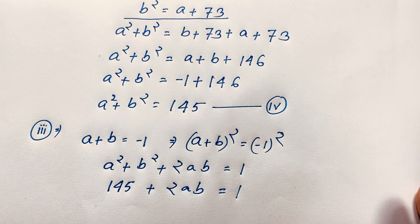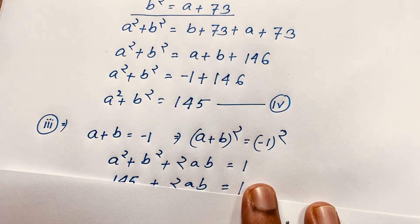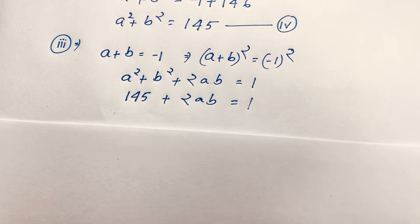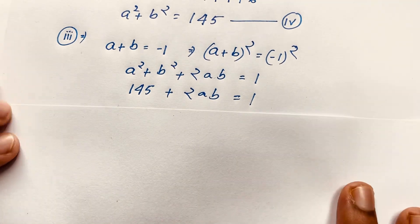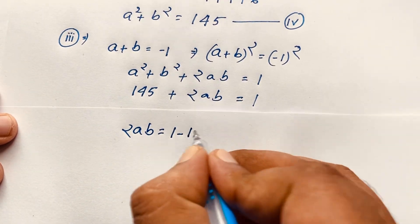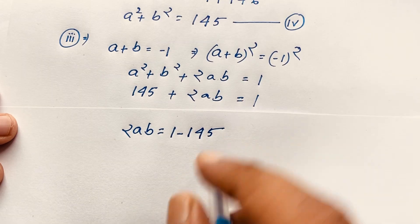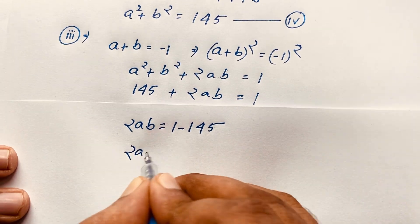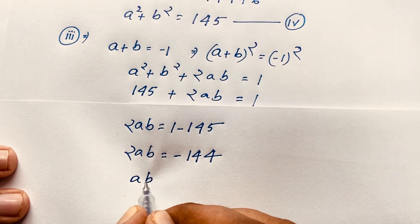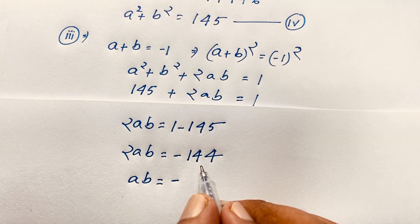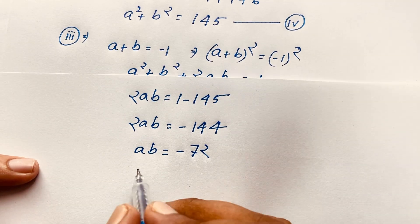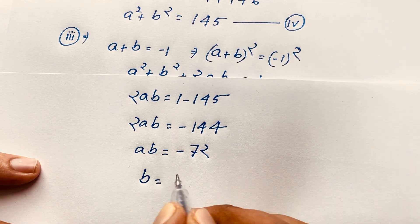Substituting a squared plus b squared equals 145: we get 145 plus 2ab equals 1. Therefore 2ab equals 1 minus 145 equals negative 144. Dividing both sides by 2 gives ab equals negative 72. So b equals negative 72 over a. This is our fifth equation.